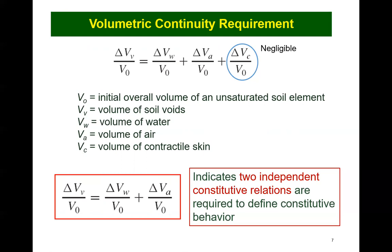Conservation of mass for all faces involved must be maintained at all times in the REV. This means that the sum of the volume changes with respect to each of the phases must be equal to the overall volume change of the referential element. This can be achieved by imposing a volumetric continuity requirement on the REV element. In other words, the sum of the changes in the volume of air and water in the referential element must be equal to the overall volume change of the REV, since the soil particles are assumed to be incompressible. The volumetric continuity requirement shows that two independent constitutive relations are now required to define the volume mass constitutive behavior of an unsaturated soil.